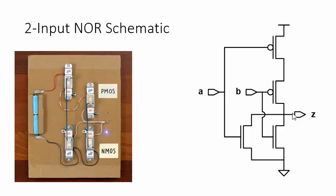The two NMOS transistors are connected in parallel between the output and ground. Two pairs of connected gates serve as the NOR inputs.